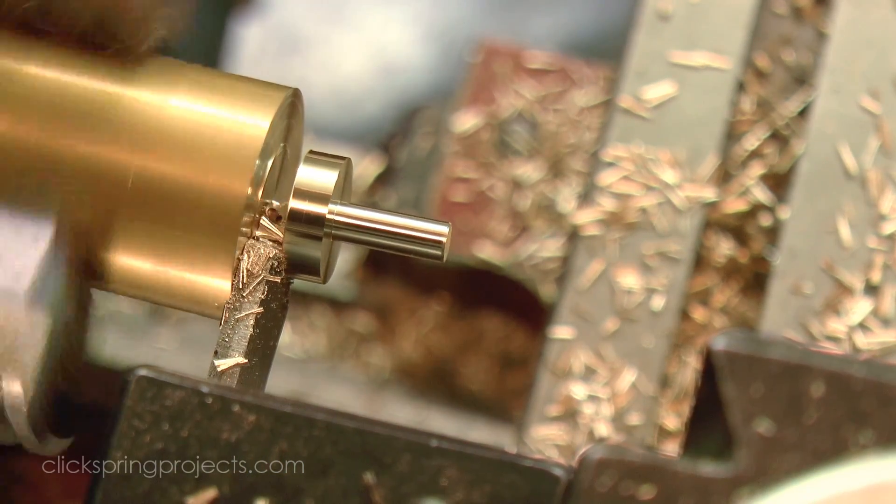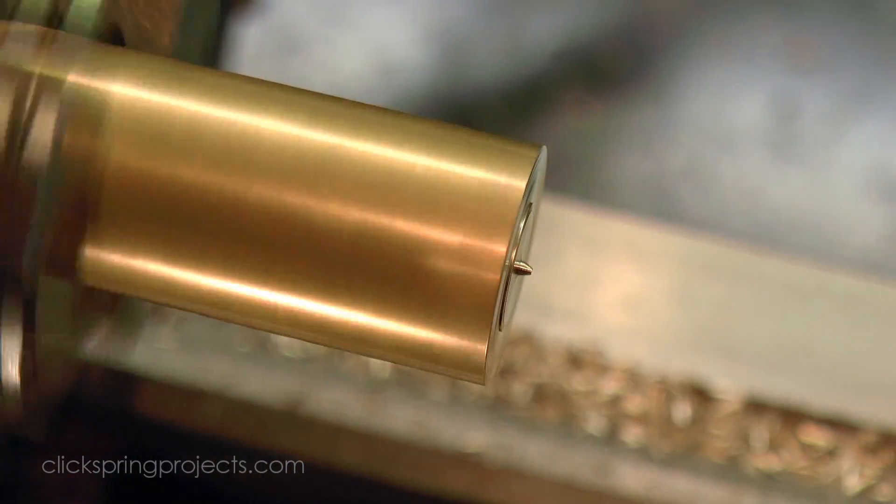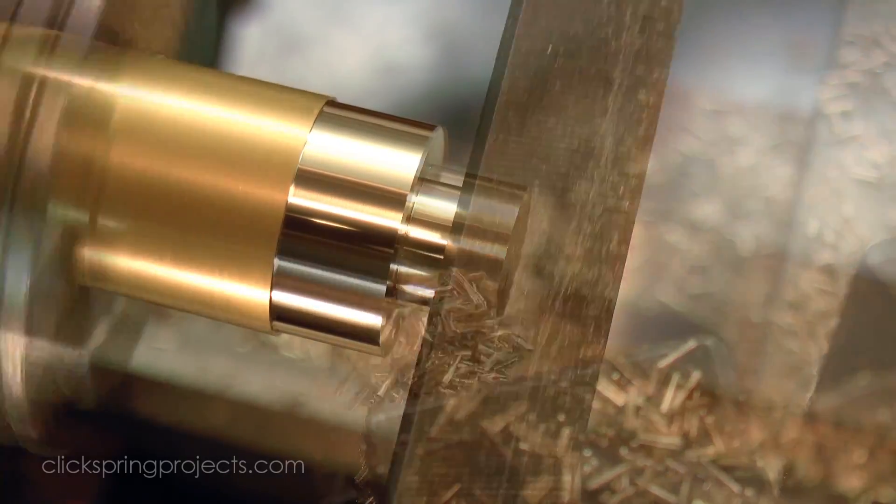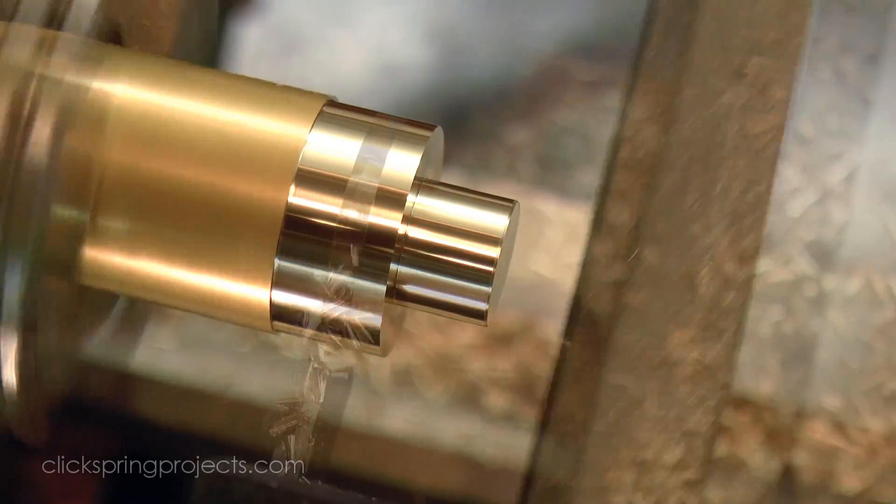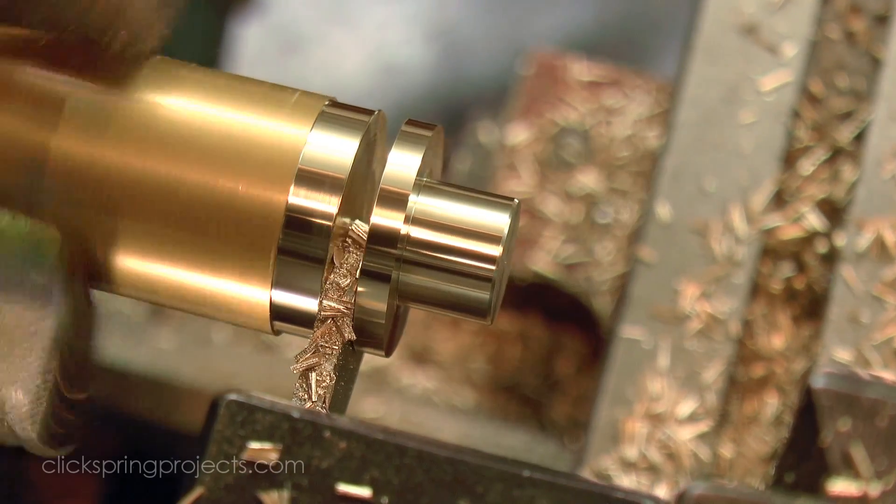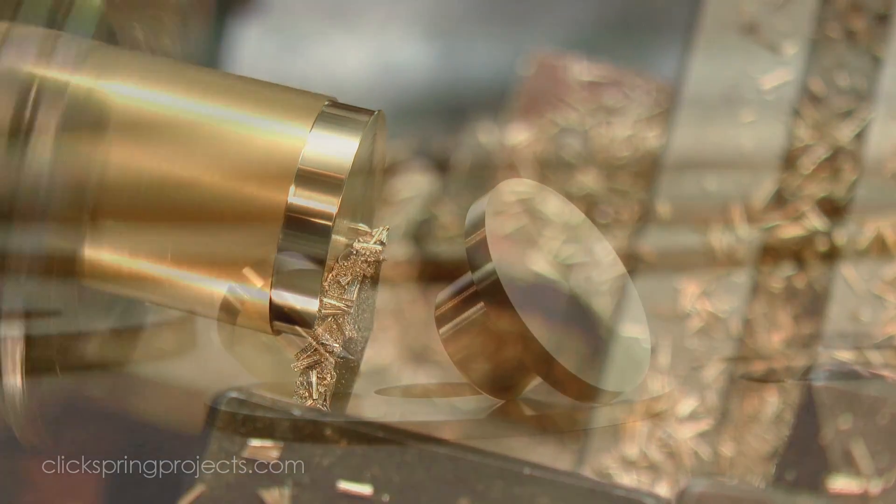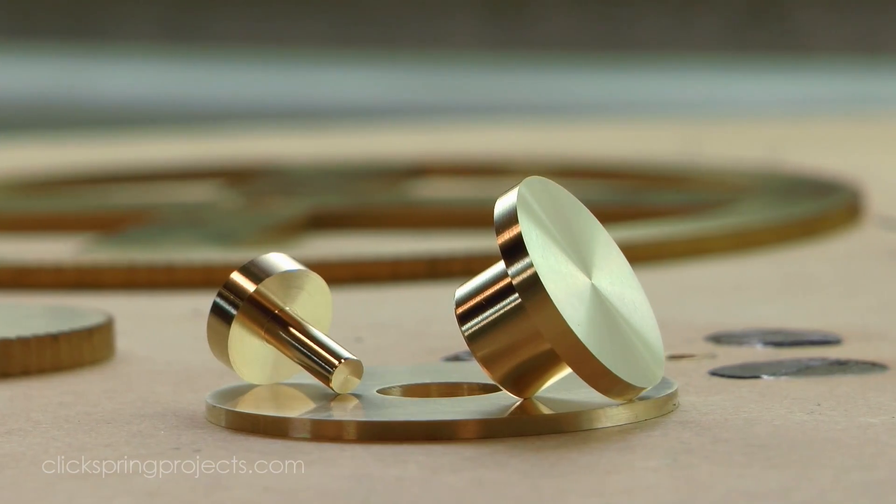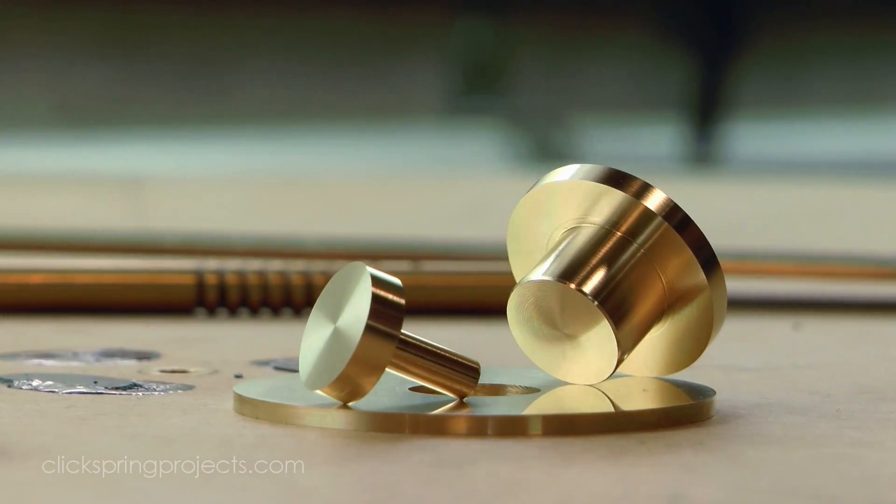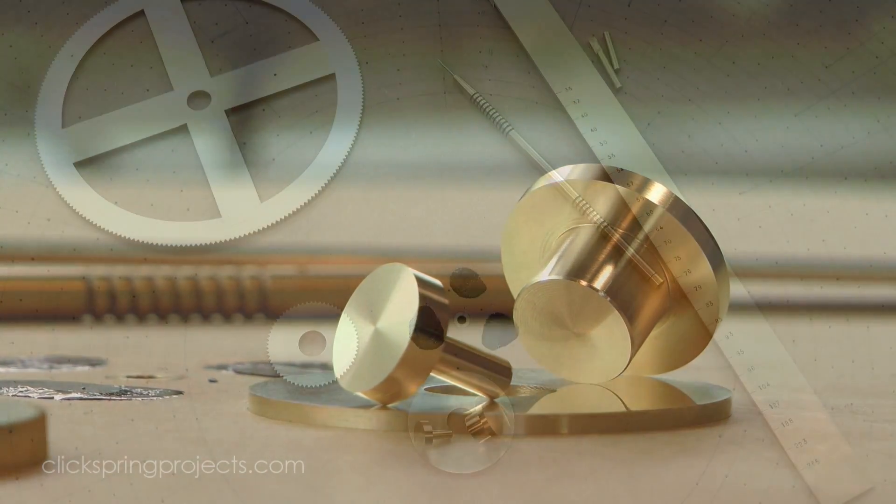Of course, marking out rarely happens in isolation. There's usually a few alignment tools required to get that scriber exactly where it needs to be, and this job is no different. So I've made a couple of small alignment pins to help me out. One to locate parts on the division plate, and one to bring all three components into alignment for drilling out the rivet hole positions.